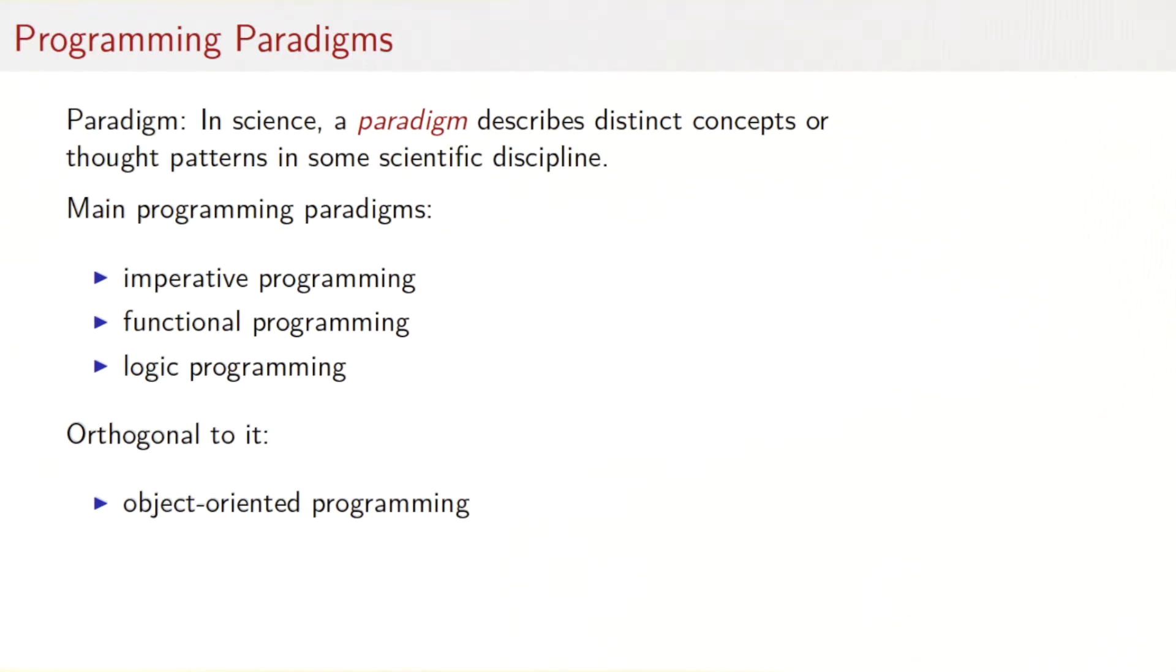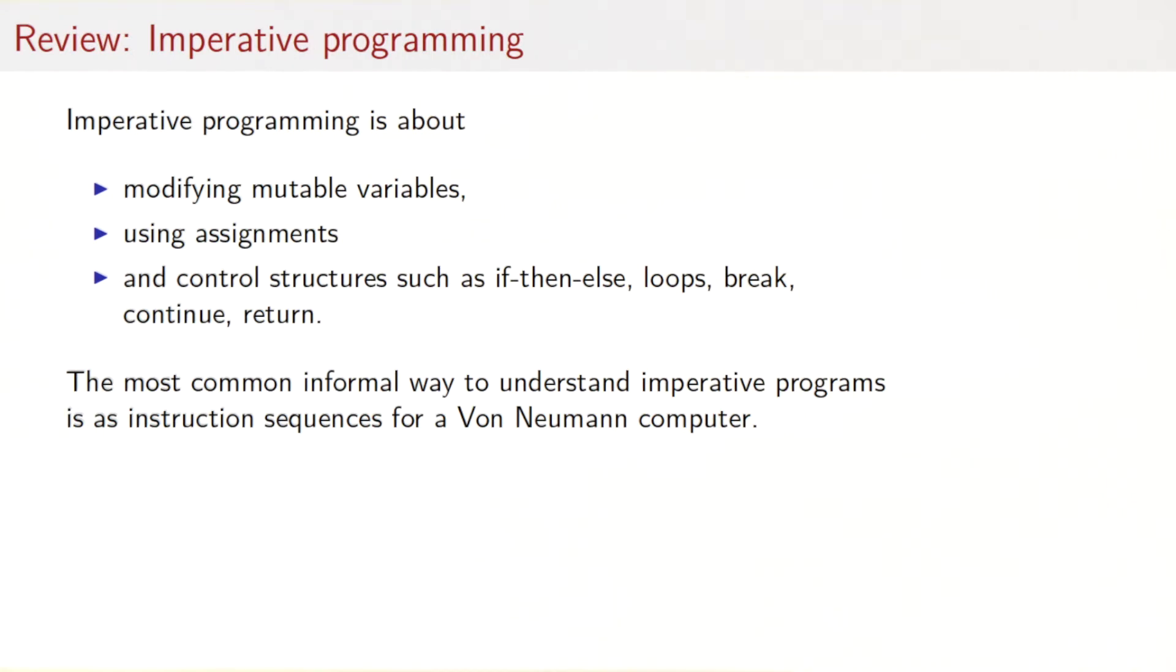Some people call object-oriented programming a paradigm, but in my mind, it's really something that's orthogonal to the three paradigms here in the sense that it can be combined well with both imperative programming and functional programming or even logic programming. Let's review what imperative programming is as a paradigm. Imperative programming is really about modifying mutable variables using assignments, and those will be composed with control structures such as if-then-else, loops, break, continue, return, and so on.